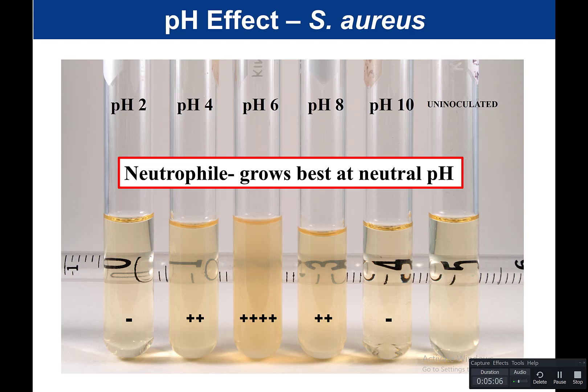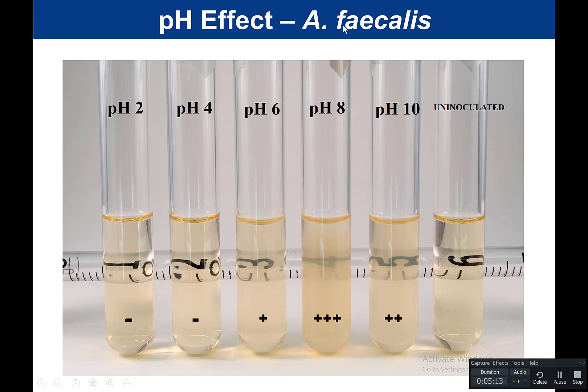Staph aureus is an example of a neutrophile. For Alkaligenes faecalis, this is an organism found in the colon — 'faecalis' tells you feces. It is non-saccharolytic. If we look at where it grew best, it grew best at about pH 8, so 3+ for pH 8. pH 10 grew a little bit less, so 2+. At pH 6, we see a little bit of growth, quantitated as 1+. But at pH 2 and pH 4, there is no growth.